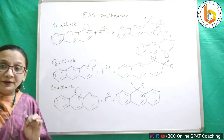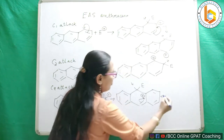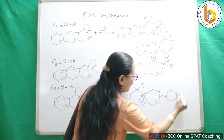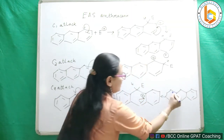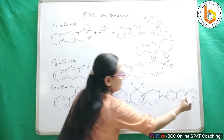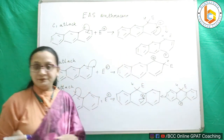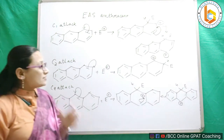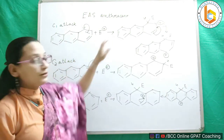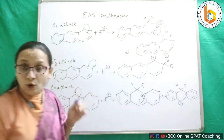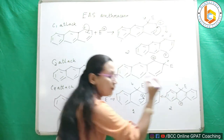The double bond then moves to nullify the positive charge, and I get the next resonating structure — three rings again. The double bond is as it is on one side, and on the other side a double bond with a positive charge, with the electrophile and hydrogen shown. So C1 attack gives two resonating forms, and C9 attack also gives two resonating forms.